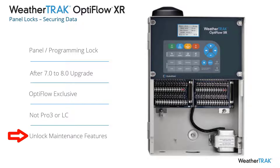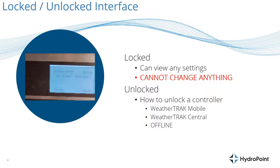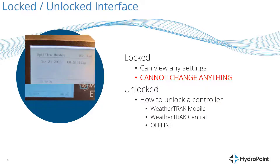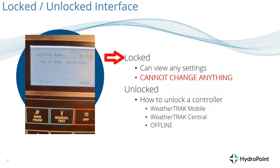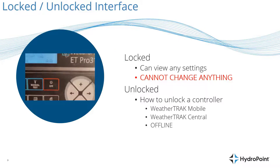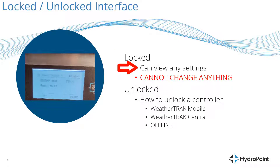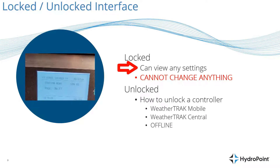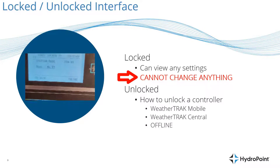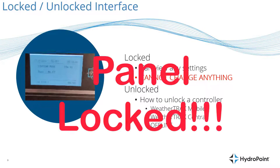We're going to talk about how to unlock that panel so you can use the maintenance features built into the WeatherTrack software. When you walk up to a panel in the field, you can easily identify an OptiFlow panel running version 8 firmware by pushing the Run button and seeing the OptiFlow message in the upper left corner of the run screen. With a locked OptiFlow panel, you can scroll through and look at any settings, but as soon as you try to make a change, you'll see a message that says 'panel locked.'